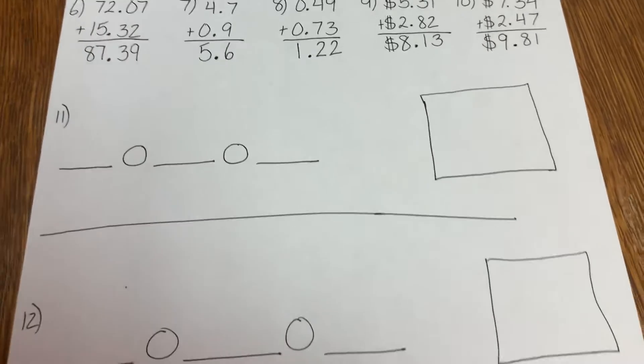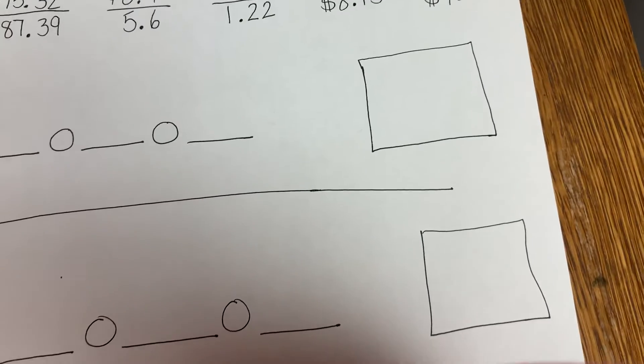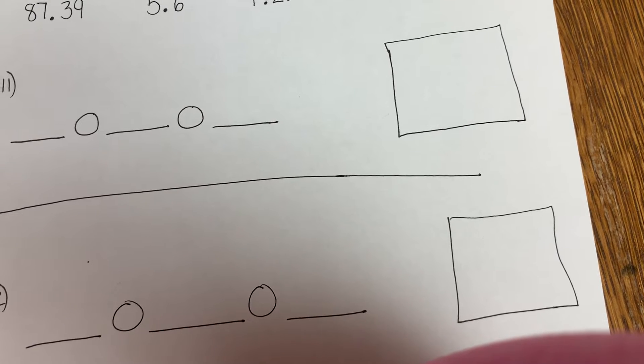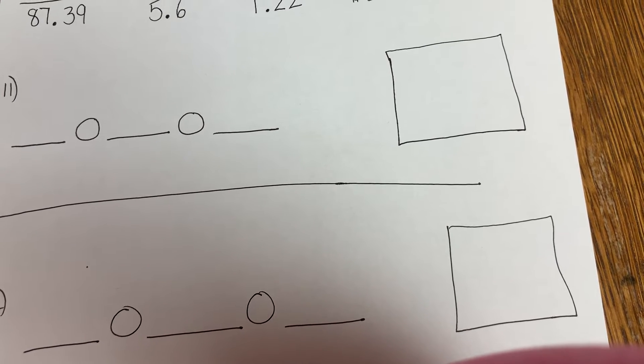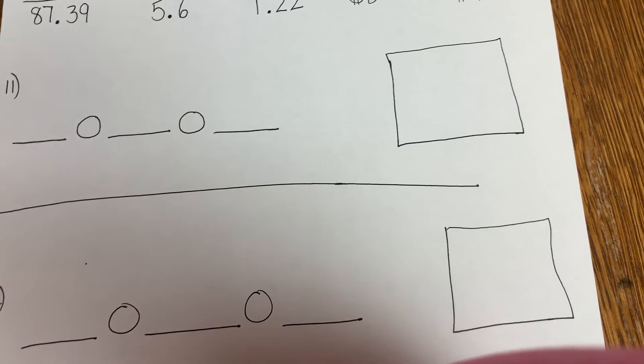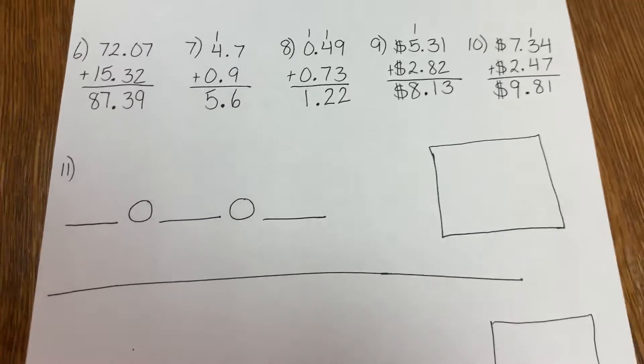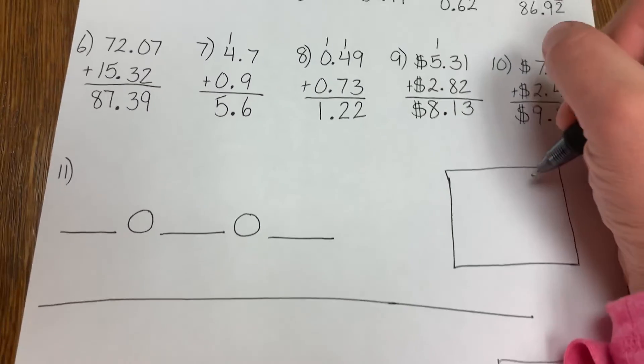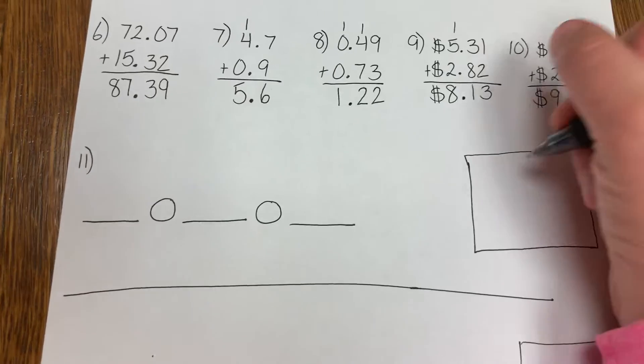On number 11, it's a word problem. It says, Owen and his family like to go hiking. Today they hiked 2.1 miles. Yesterday they hiked 1.6 miles. How many miles did they hike in both days? So the first thing I'm going to do is use this box over here to add the two days together.